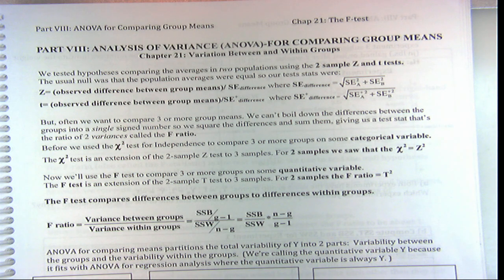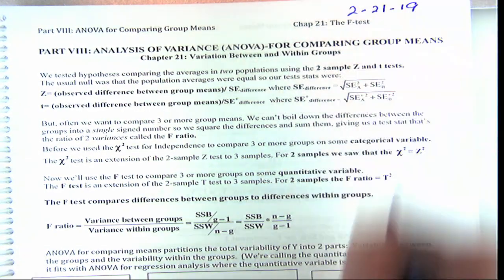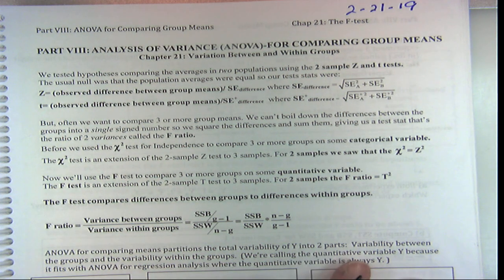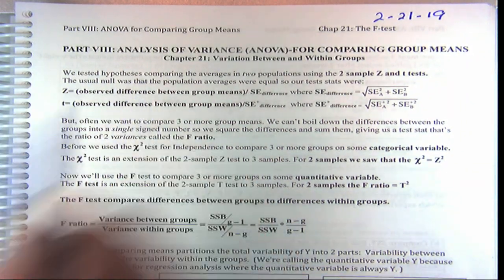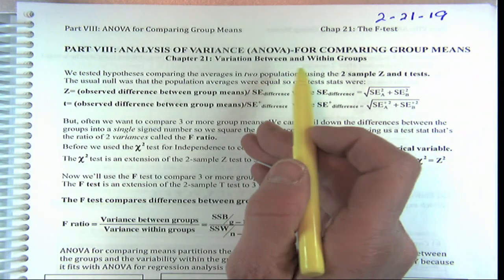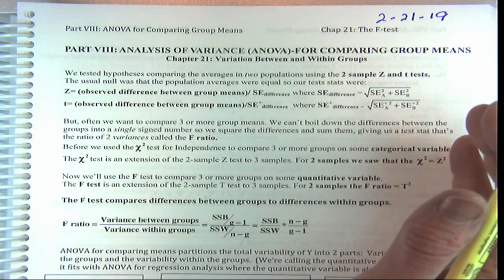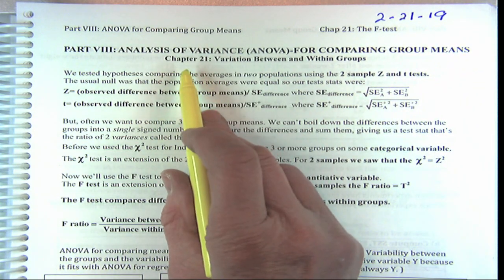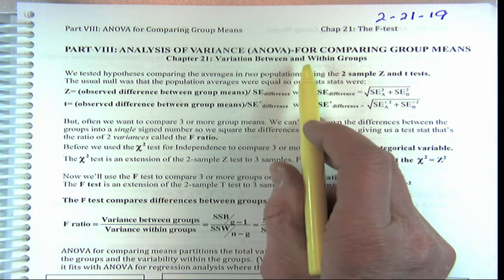Okay, today is February 21st. We're talking about something called Analysis of Variance — you've probably heard of it. How many have heard of Analysis of Variance? It's also abbreviated as ANOVA, and we're going to look at it to compare group means.